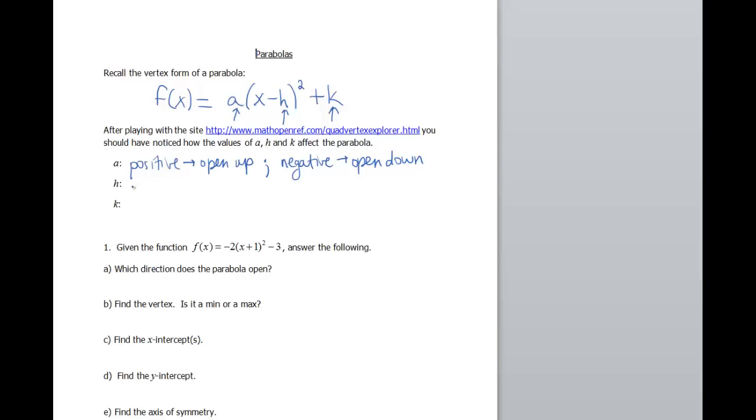h moves the parabola left and right. So if h is positive, now you also have to make note here, there is a negative sign built into this formula. So when I say if h is positive, that means you're gonna have a subtraction in your formula. So if h is positive, that's gonna move your parabola to the right. If h is negative, it's gonna move your parabola to the left.